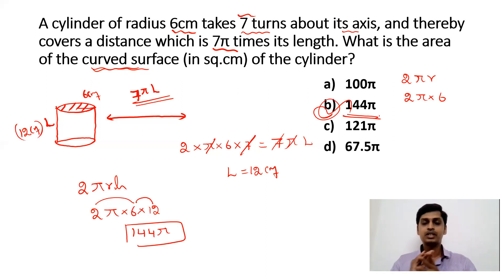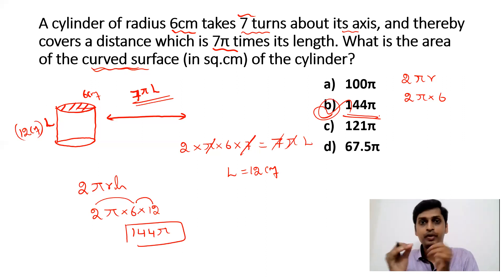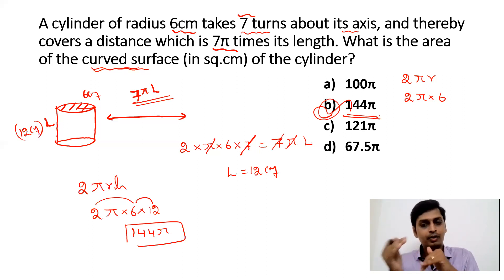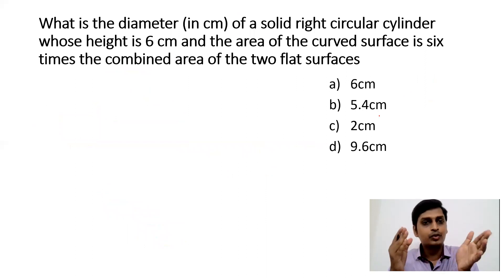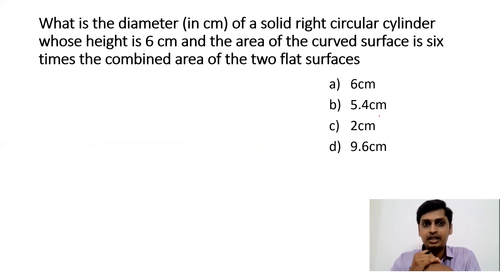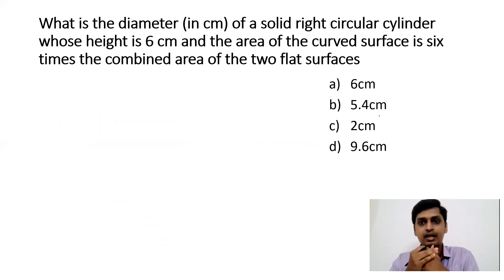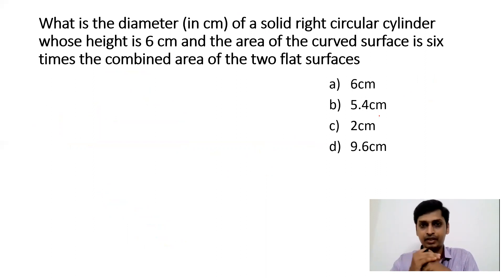To solve cylinder questions in a fraction of seconds, you must understand the properties of a right circular cylinder. Next question: what is the diameter of a solid right circular cylinder whose height is 6 cm and whose curved surface area is 6 times the combined area of the two flat surfaces?